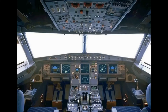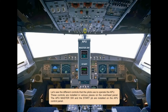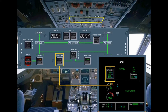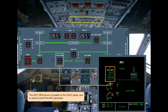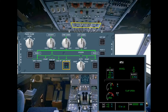The different controls that pilots use to operate the APU are installed in various places on the overhead panel. The APU master switch and the start push button are installed on the APU control panel. The APU gen push button switch is located on the electrical panel and controls the APU generator. The APU bleed push button switch is located on the air conditioning panel and controls the APU bleed system.